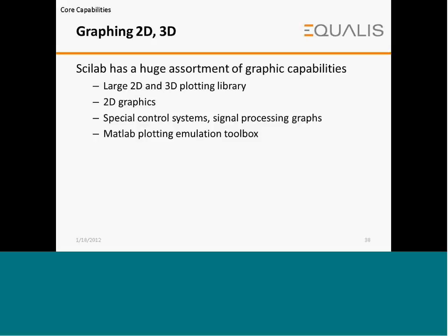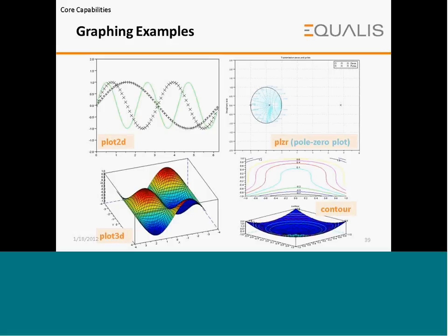For 2D or 3D graphing, SciLab has a huge assortment of graphic capabilities including a large 2D and 3D plotting library, 2D graphics, special control system graphs, signal processing graphs, and a MATLAB plotting emulation toolbox. Examples of graphing functions include plot2d, pole-zero plot, plot3d, and contour.